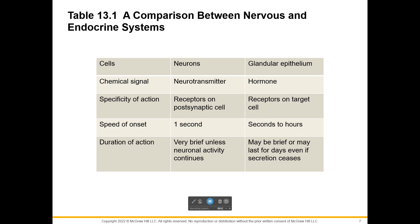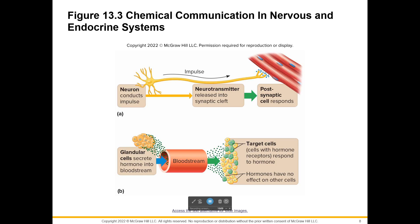In terms of duration, neurons act very quickly, where your endocrine glands might act quickly but the effects can actually last for a few days after secretion. Here's what it looks like: you have a neuron releasing neurotransmitter — in this case talking to a skeletal muscle — and then glandular cells releasing hormones into the bloodstream. Only the target cells that have the receptor to bind to that hormone will receive communication.